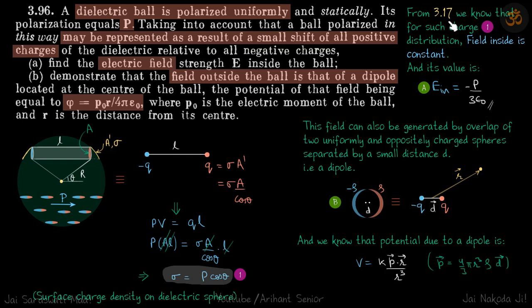So in problem number 3.17 the sigma was σ₀ cos θ and the field was -σ₀/(3ε₀). So here instead of σ₀ we have P so E inside will be -P/(3ε₀). Just look at this problem once and you will understand why we are writing this and why this kind of charge distribution on the surface gives a uniform electric field inside.